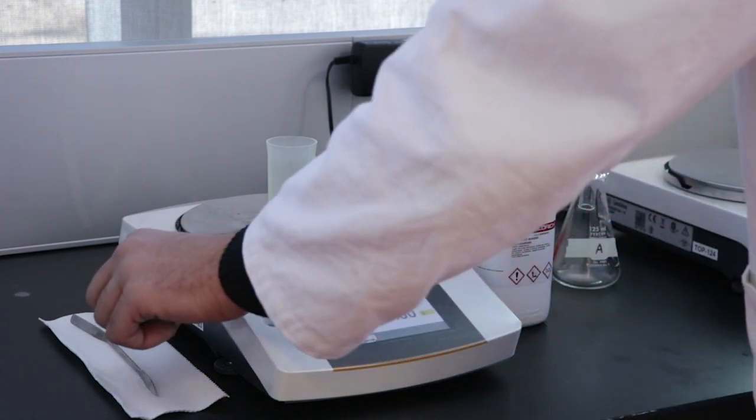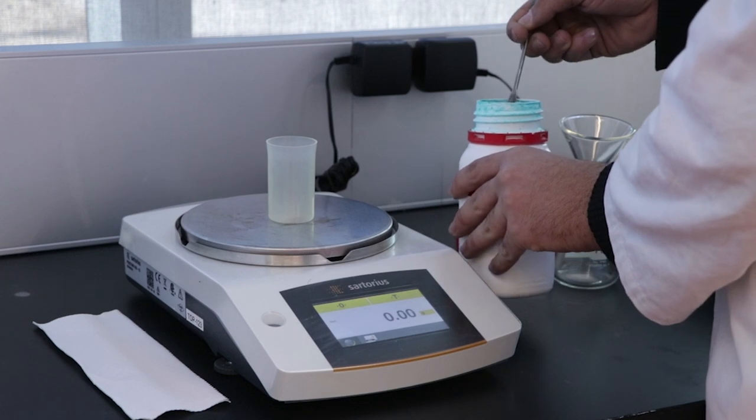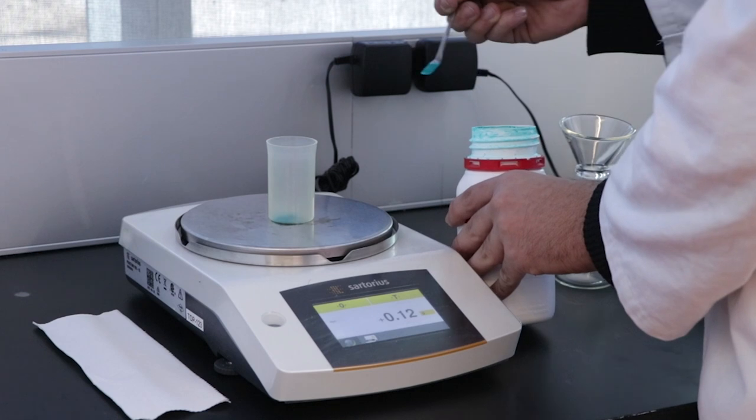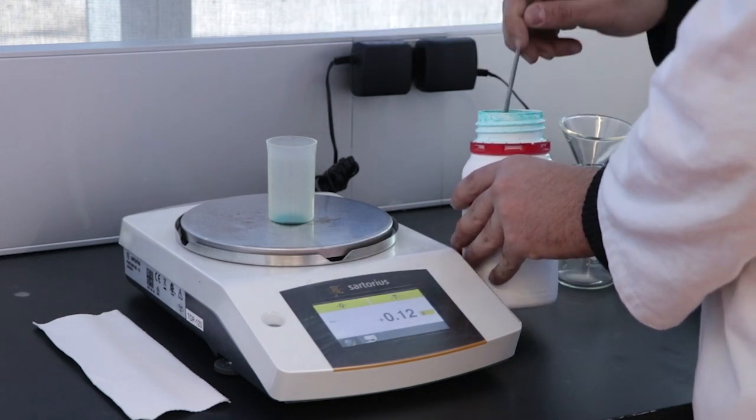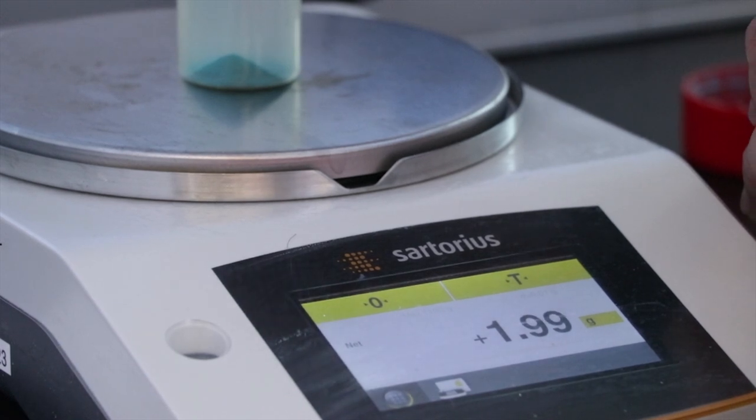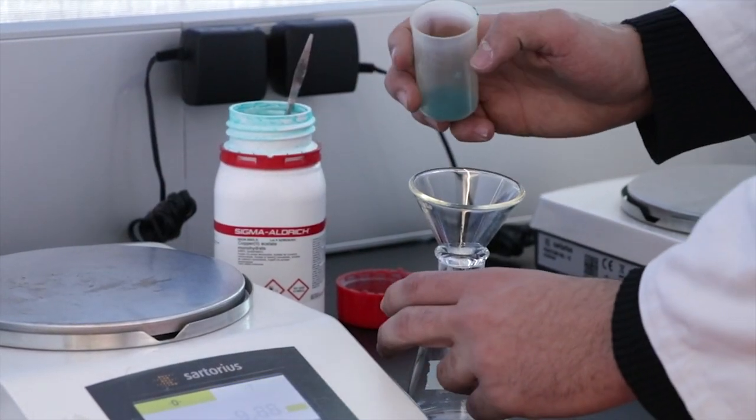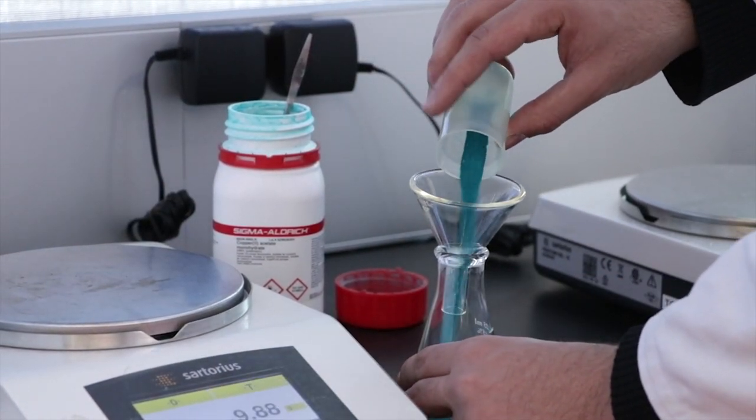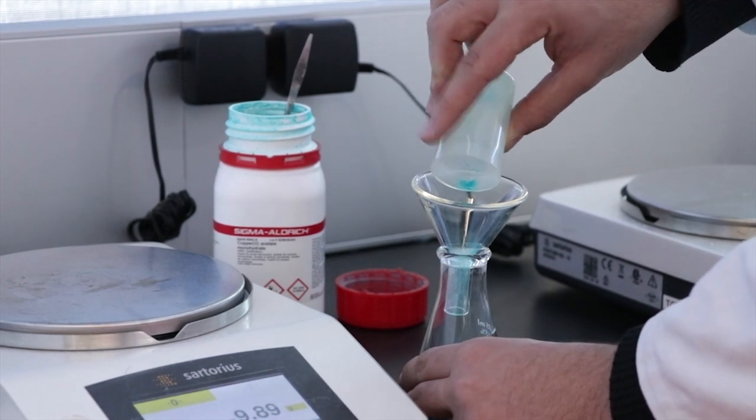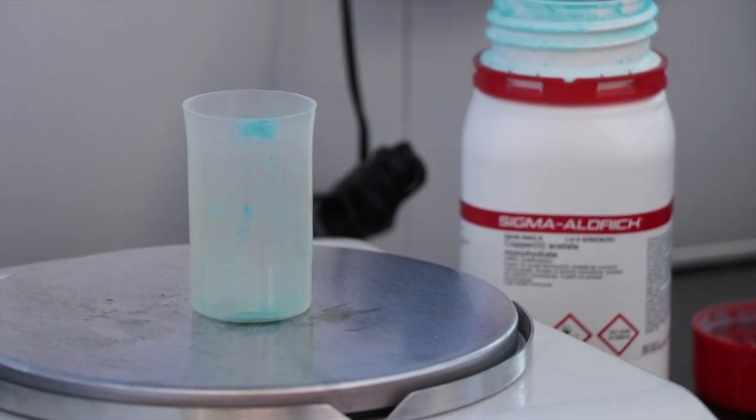Begin by weighing by difference 2 grams of copper acetate monohydrate on the top loading balance. Remember to zero the scale before adding any chemicals to the weighing bottle. Click the link in the description for a video explaining weighing by difference. Once you have weighed about 2 grams of the solid, transfer it into a 125 mL Erlenmeyer flask labeled A and re-weigh the empty bottle. It is okay if not all of the solid is transferred from the weighing bottle, as you can calculate the exact amount of solid transferred into flask A by taking the difference of the two weights.